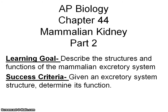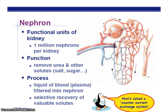AP Biology, Chapter 44, Regulating the Internal Environment, and today the Mammalian Kidney Part 2. The nephron is the functional unit of the kidney. Just like the alveoli was the functional unit of the respiratory system, just like the neuron is the functional unit of the nervous system, just like the villi are the important places of the small intestine and increased surface area, the nephron of the kidney is where the magic of filtration and absorption and eventually making the urine happen.